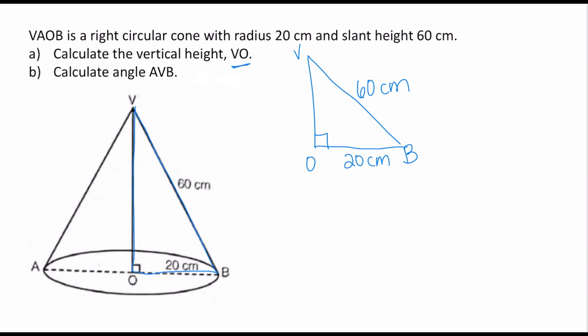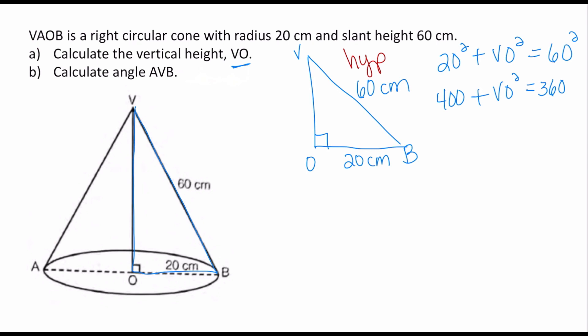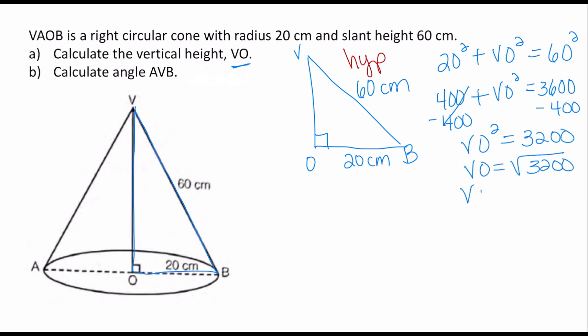We're going to find VO by applying the Pythagorean theorem. Whenever you have two side lengths of a right triangle you can find the third. We set up: 20 squared plus VO squared equals 60 squared, because 60 is the hypotenuse — be careful to place it correctly. So 400 plus VO squared equals 3600. Subtracting 400 from both sides gives VO squared equals 3200. Taking the square root, VO is approximately 56.6 centimeters.